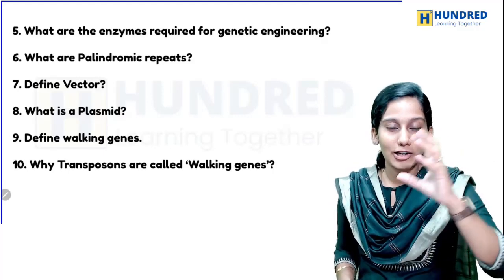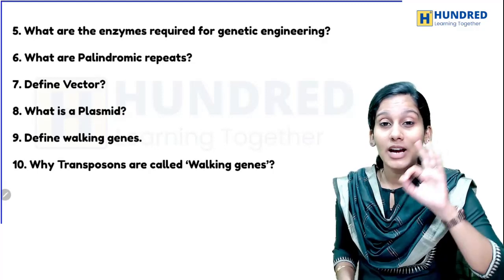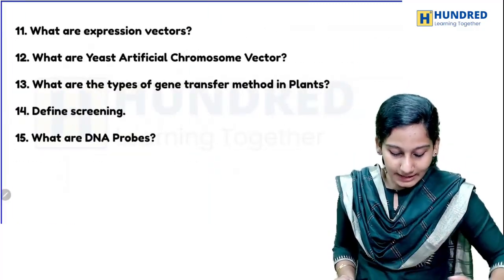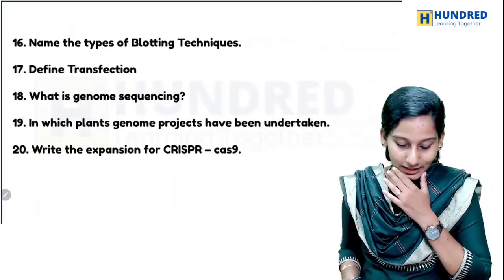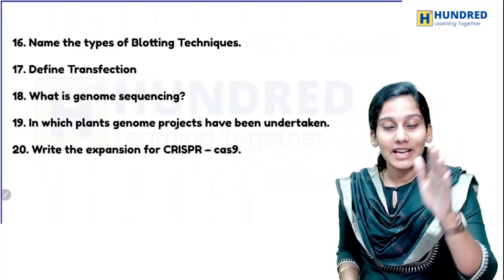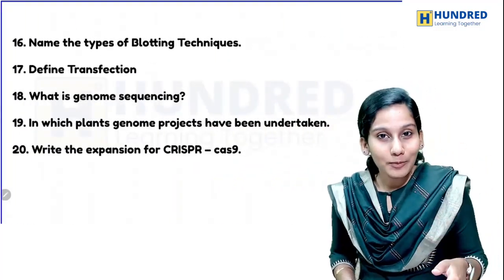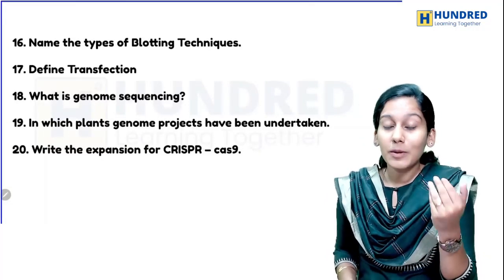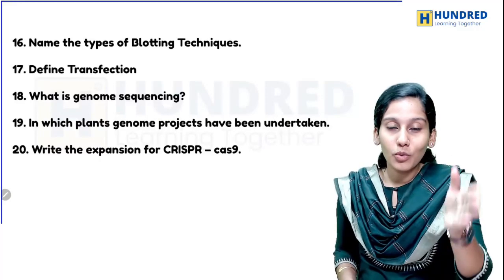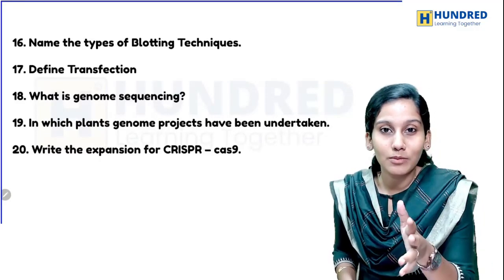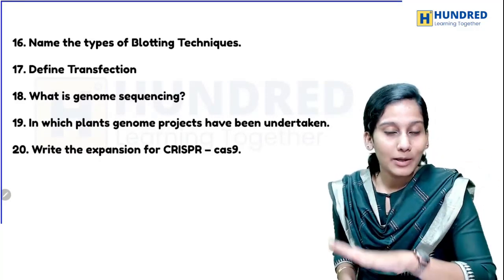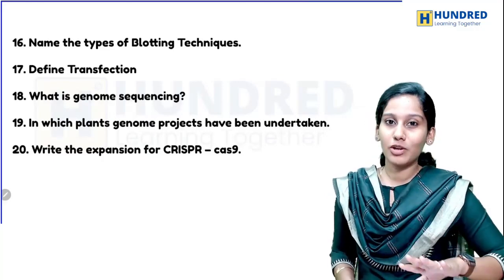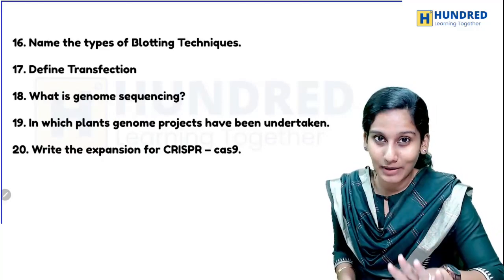The diagram along with description for PBR322 gives three marks or can be asked in a five-mark question. Yeast artificial chromosomes, DNA probes, blotting techniques, and gel electrophoresis — you need to mention the names and sometimes explain. Northern blotting, western blotting, southern blotting — know what type of molecule each detects: RNA, DNA, or protein.